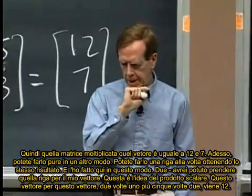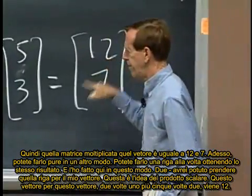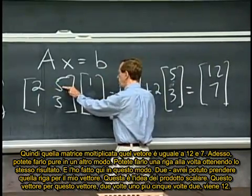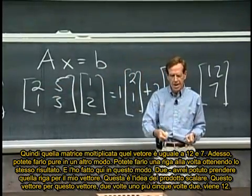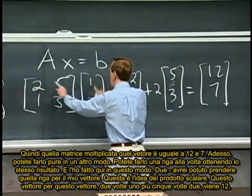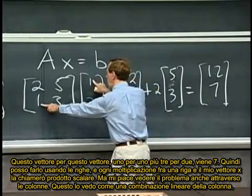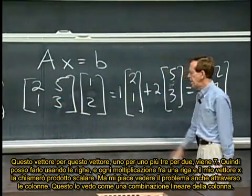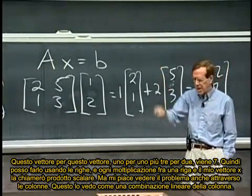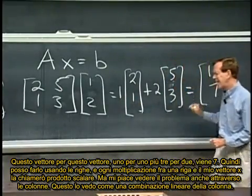Now, you could do that another way. You could do it a row at a time. You could do, and you would get this 12, and actually I pretty much did it here, this way. I could take that row times my vector. This is the idea of a dot product. This vector times this vector, 2 times 1 plus 5 times 2 is the 12. This vector times this vector, 1 times 1 plus 3 times 2 is the 7. So I can do it by rows, and in each row, each row times my x is what I'll later call a dot product. But I also like to see it by columns.